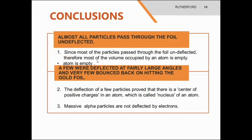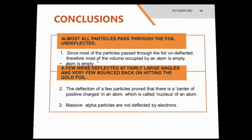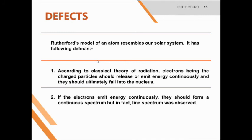Conclusions: Since most of the particles pass through the foil undeflected, therefore most of the volume occupied by an atom is empty. Number two, the deflection of a few particles proves that there is a central positive charge in an atom, which is called the nucleus. Massive alpha particles are not deflected by electrons. Defects: according to the classical theory of radiation, electrons, being charged particles, should release or emit energy continuously and should ultimately fall into the nucleus — but we observe this is not happening. If the electrons emit energy continuously, they should form a continuous spectrum, but in fact, the line spectrum was observed.